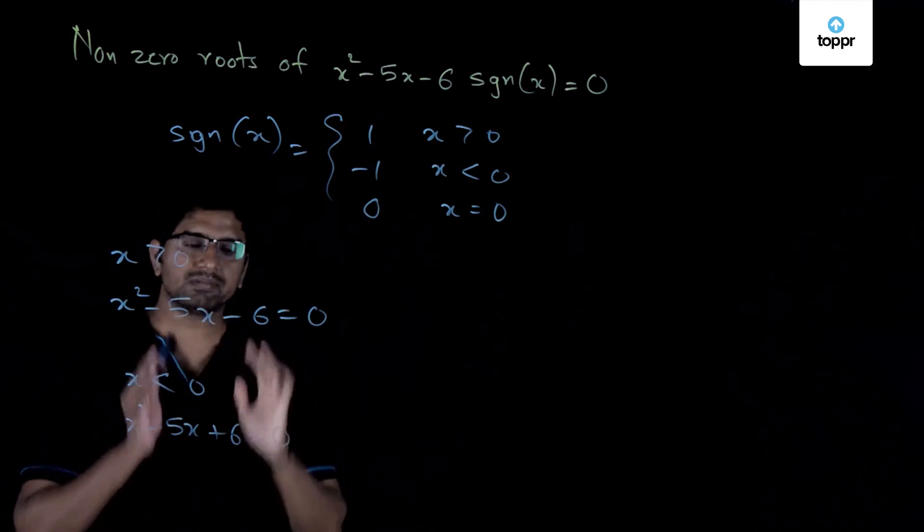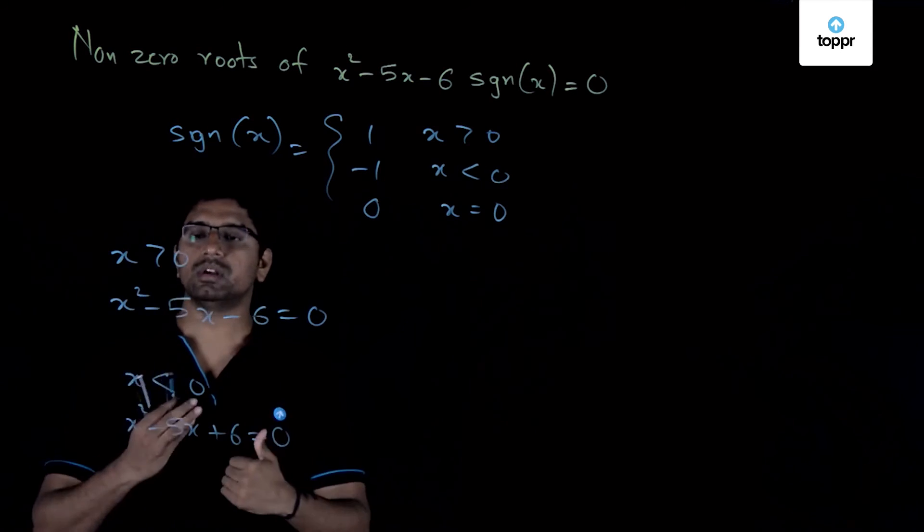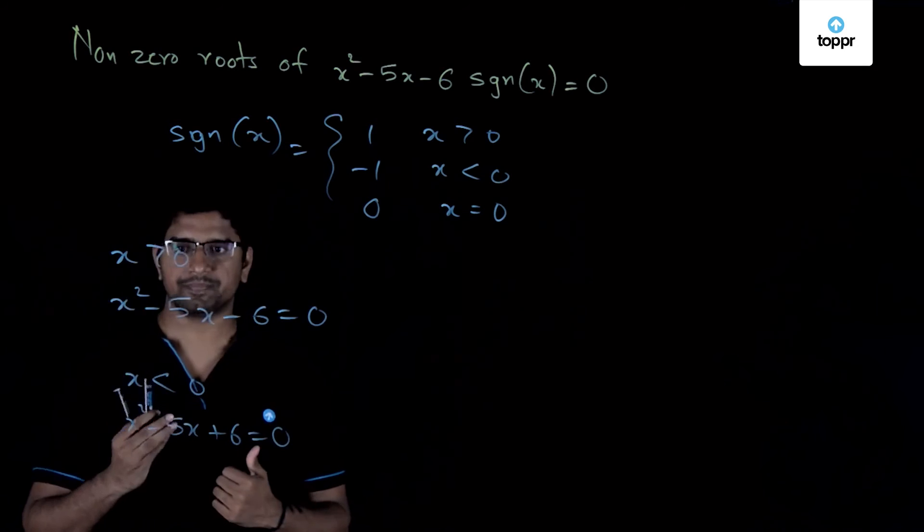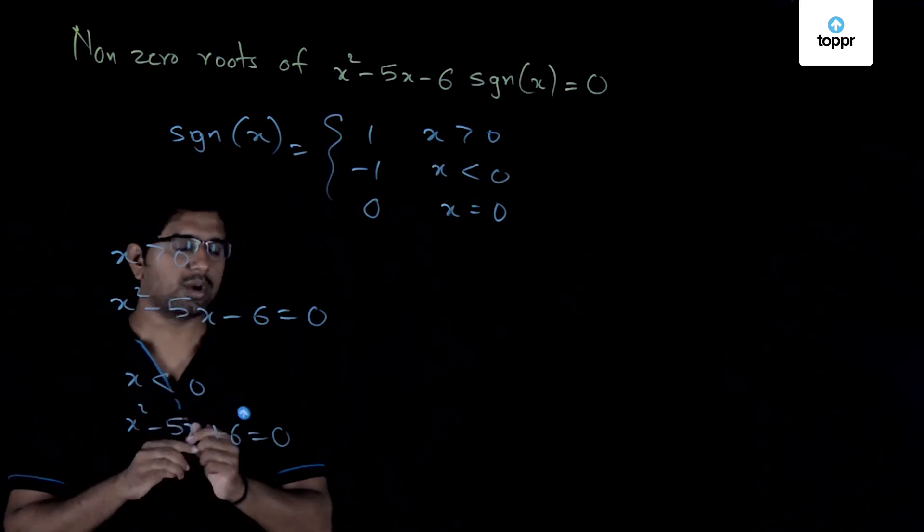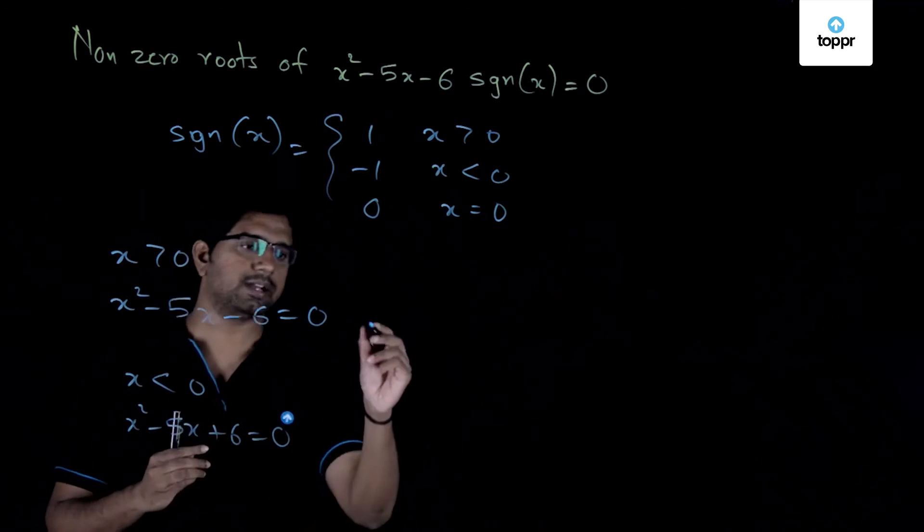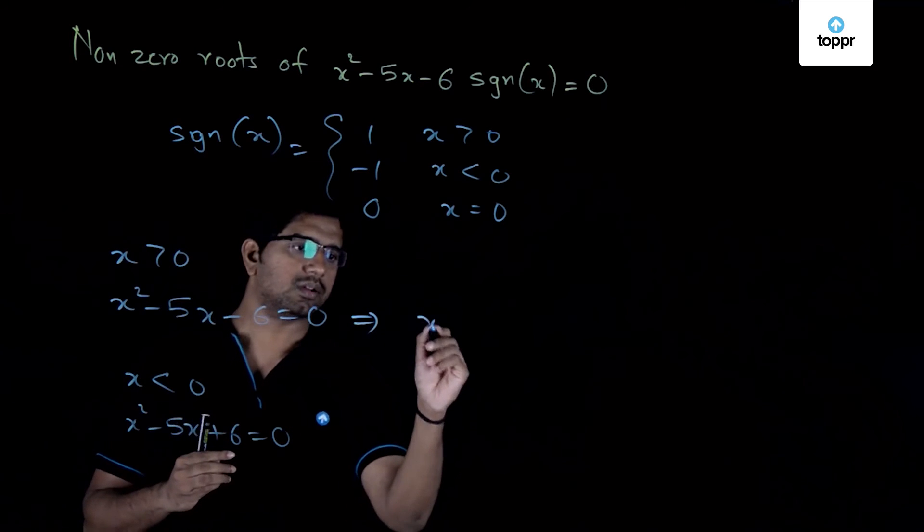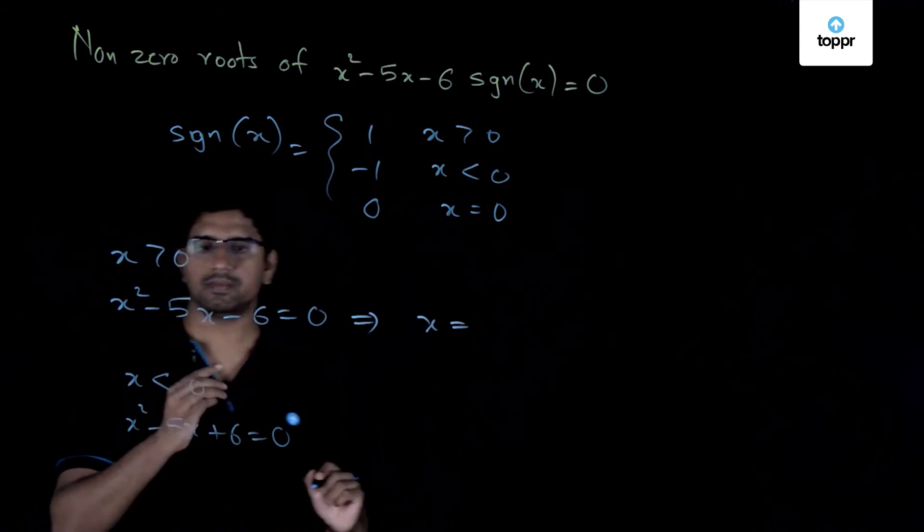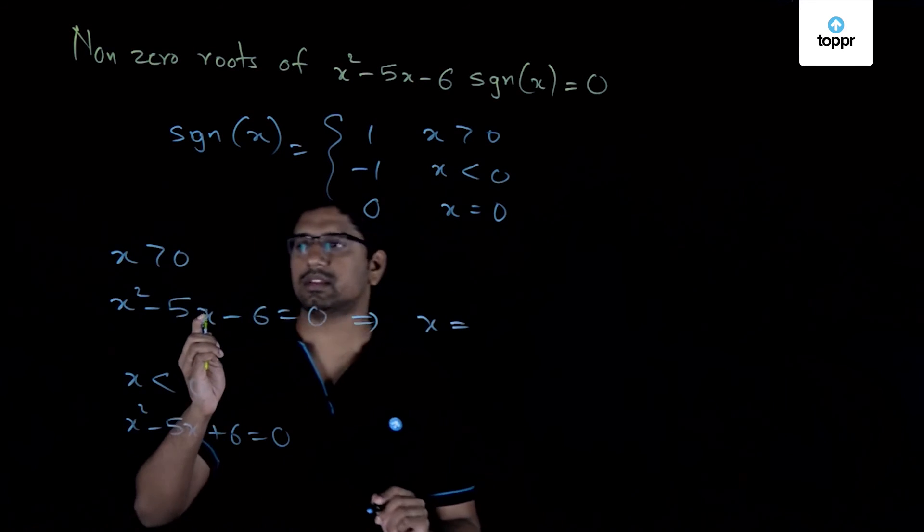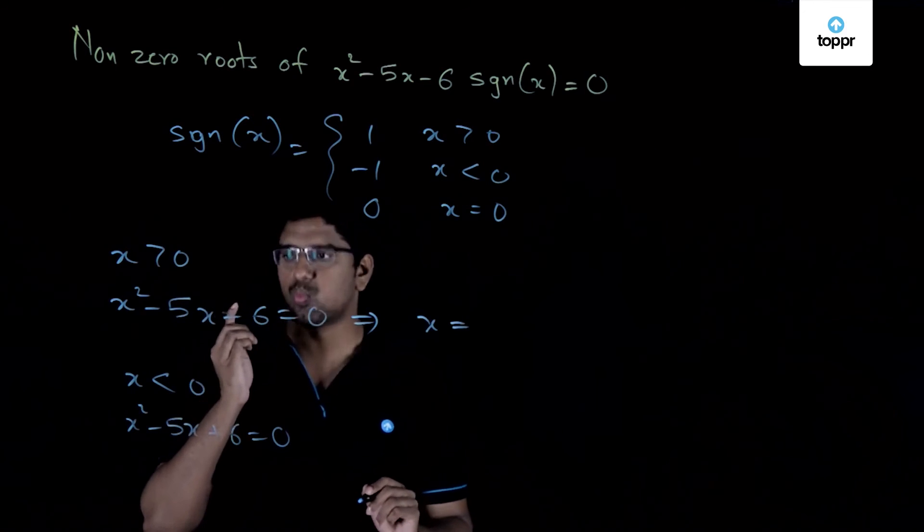So now once we have achieved it, let us see how many roots are satisfying the given conditions. So in this case, what are the roots of this quadratic? The roots are, so we get x is equal to 6 or minus 1.